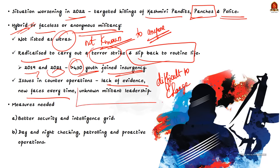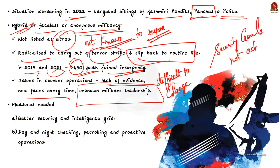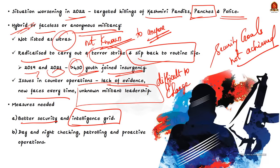The conclusion on the first goal is that the security goal has not been achieved at all, though some improvements could be seen. What is needed is to further enhance security measures — putting in place a better security and intelligence grid to prevent terrorist attacks, day-and-night round-the-clock checking, patrolling, and proactive operations against terrorists.